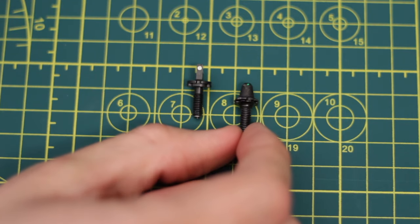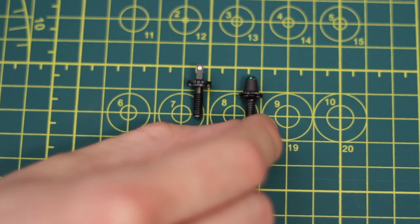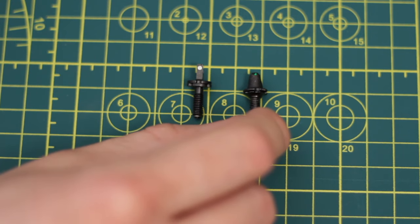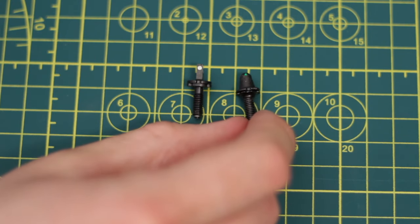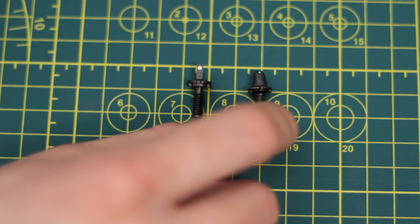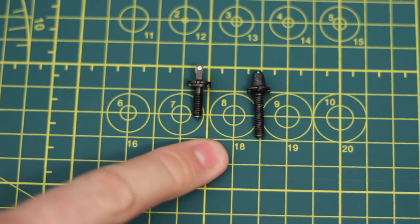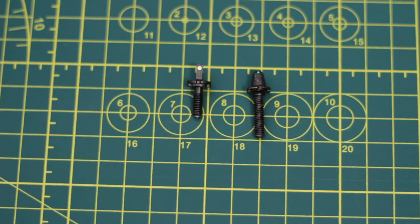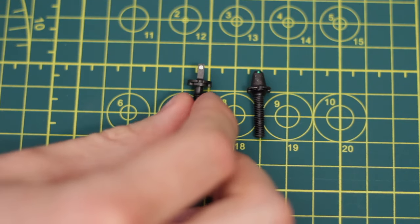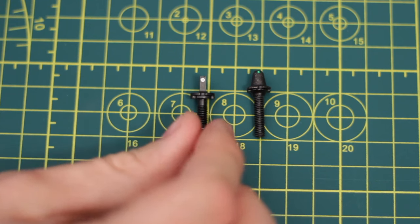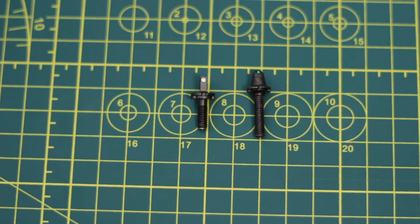Meanwhile, in these same conditions, you actually can see our LED. It's very bright. It actually gives red dot sites a run for their money, which is impressive given how affordable our site is. And I'll get more into the pricing later. But for the time being, let's take a look at how dark the room has to be before Tritium becomes visible.